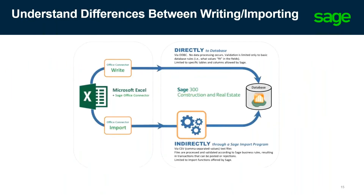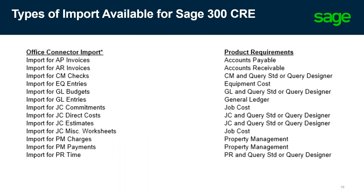Regarding the differences between importing and writing: importing is done indirectly through a Sage import program — Office Connector helps us create the CSV text file required for a successful import. Writing is a fundamentally different technology where we are actually writing directly to the database using ODBC drivers. Some people get a little uneasy when they hear about writing, but rest assured you can only write to the values that Sage programmers allow. You do want to use caution when using the writing and importing capabilities. The different import types available for 300 Construction and Real Estate include invoices, budgets, commitments, and miscellaneous worksheets.